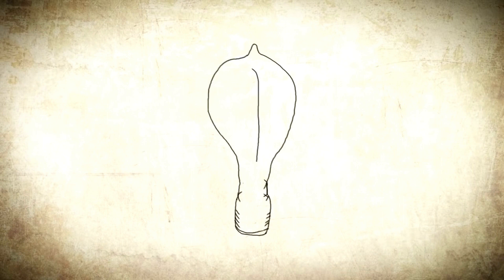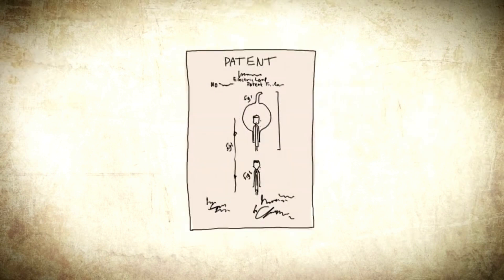Edison did not invent the first electric light bulb. He invented the first commercially practical incandescent light. Edison bought the patent on what was probably the first invented light bulb.